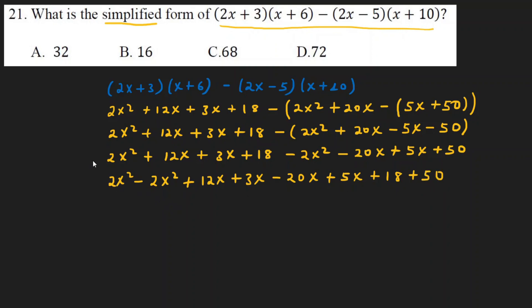So, to simplify the algebraic expression: first step, eliminate parentheses; second step, collect like terms; third step, simplify. Collecting like terms: 2x squared minus 2x squared equals 0. Then 12x plus 3x gives 15x, minus 20x gives minus 5x.